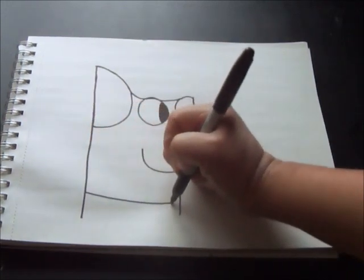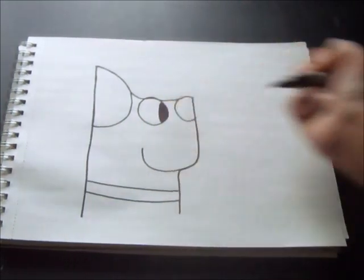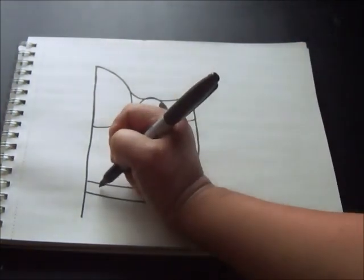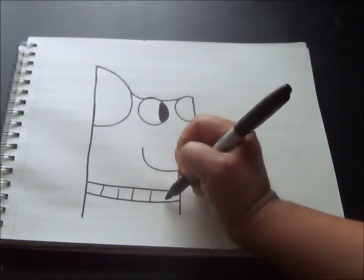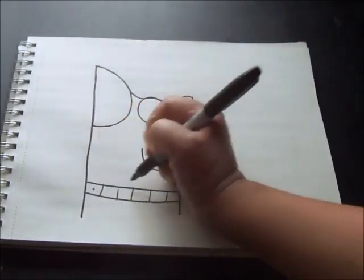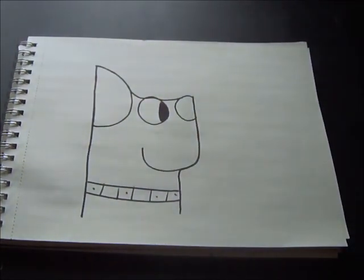This was something that I could actually draw. You can just go ahead and give him a collar, you can bling it up if you want, use different color markers or crayons or whatever. So there you go, it's that simple. Dog. Thanks for watching, you guys have fun with this. Bye bye!